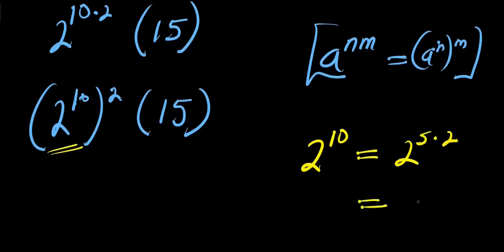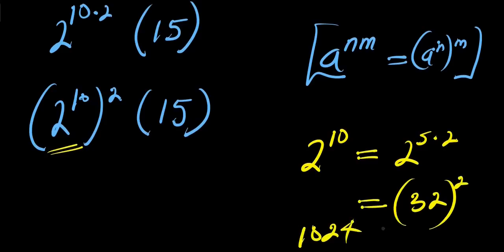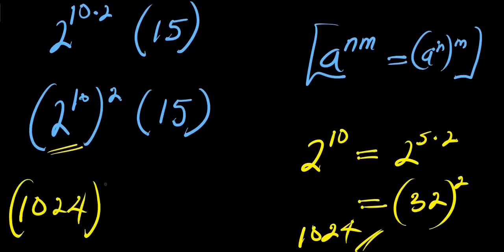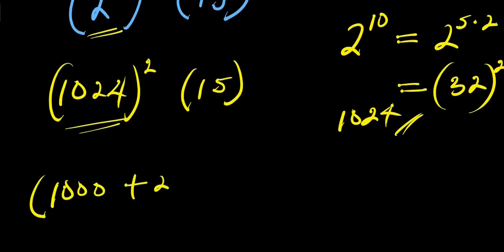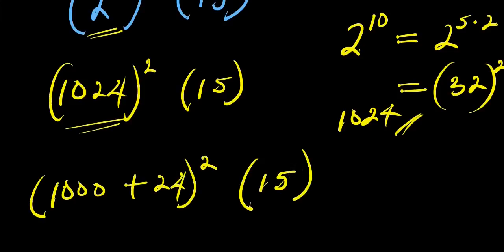Now, 2 to the power of 10 equals 1024, so 2 power 20 equals 1024 squared, which gives 1024. Therefore the expression becomes 1024 power 2 times 15.